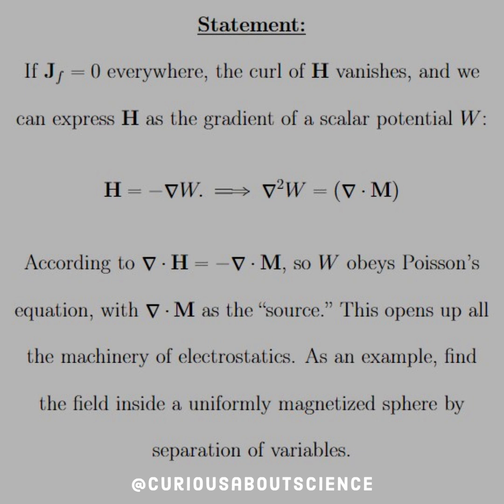In this case, we're curious about if the volume current density of the free current density is equal to zero everywhere, the curl of the auxiliary field H vanishes, and we can express H as the gradient of some scalar potential W. We've seen this before back in chapter 3.